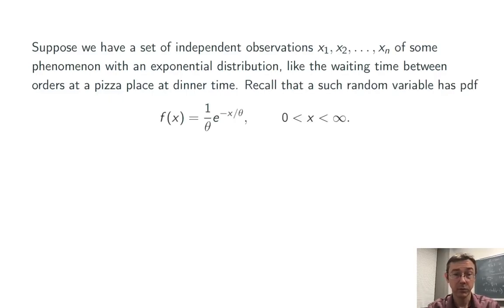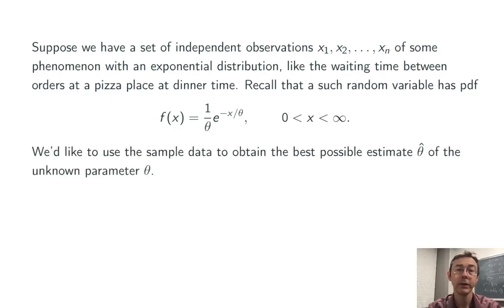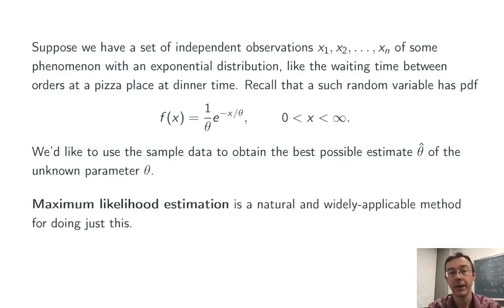A random variable with an exponential distribution has this probability density function: 1 over theta, e to the negative x over theta, where x is positive, and it's a waiting time. What we'd like to do is to use that sample data, the observations x1 up to xn, to come up with an estimator, theta hat, of that unknown parameter theta.